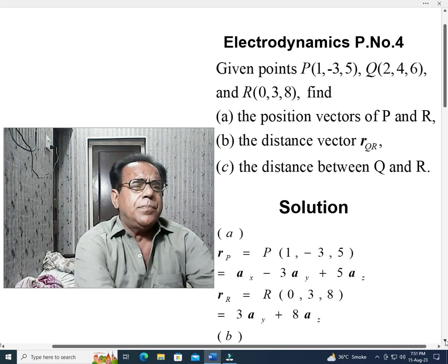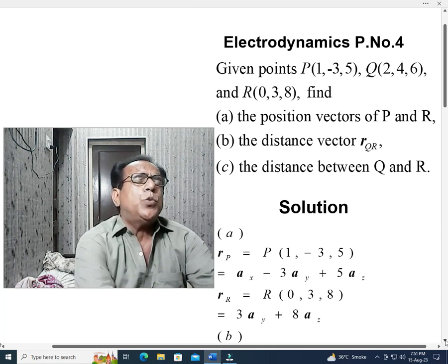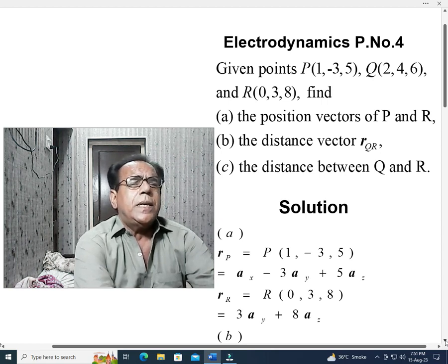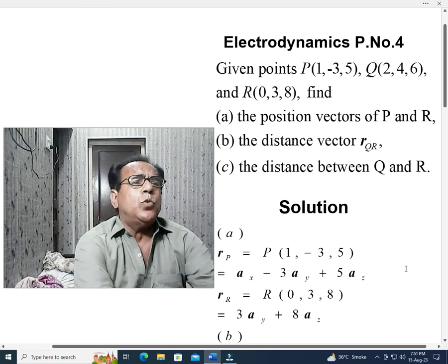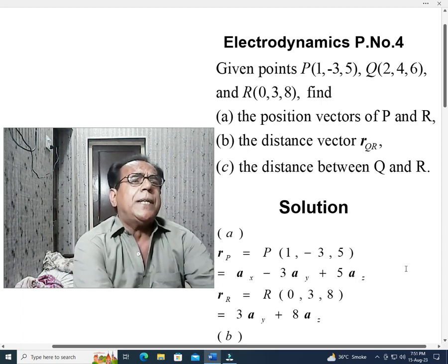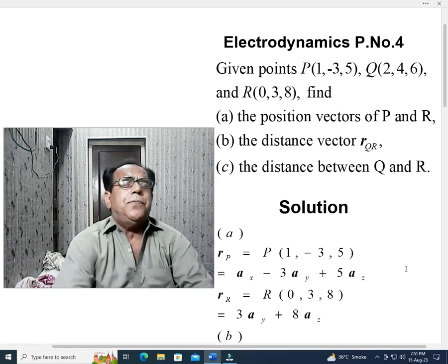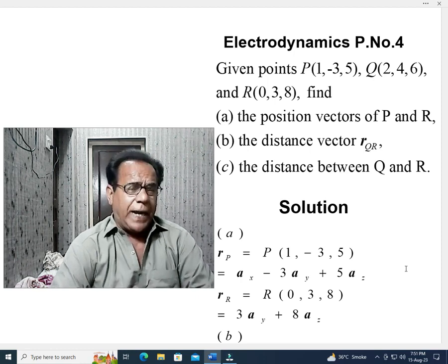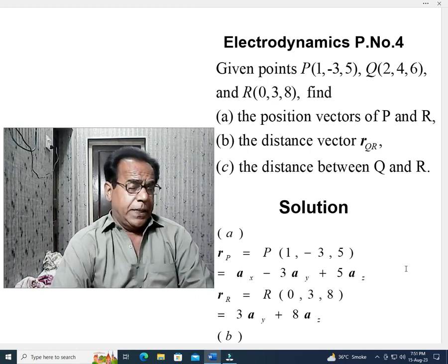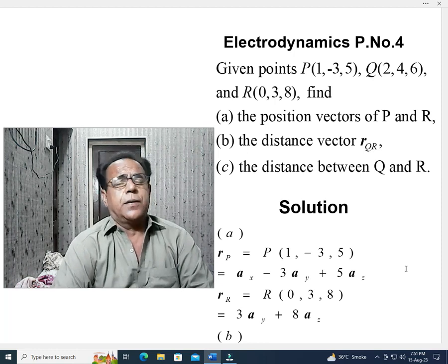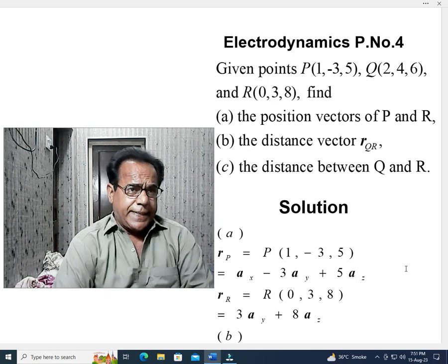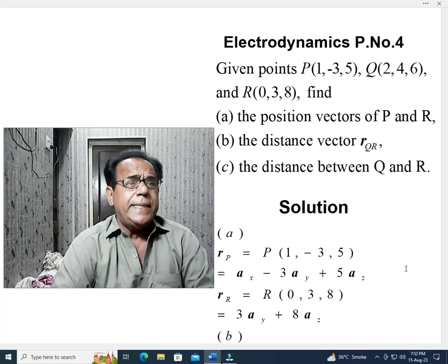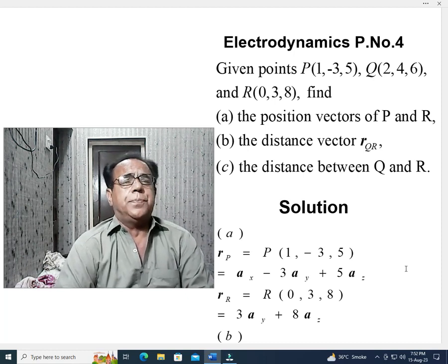Given points P(1,-3,5), Q(2,4,6) and R(0,3,8), find part A: the position vectors of P and R, part B: the distance vector r_QR, part C: the distance between Q and R.